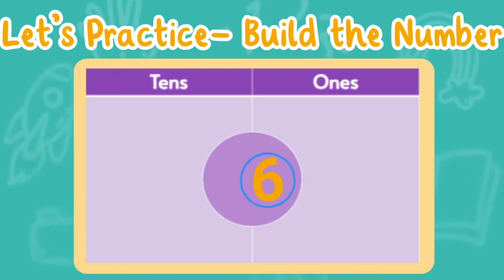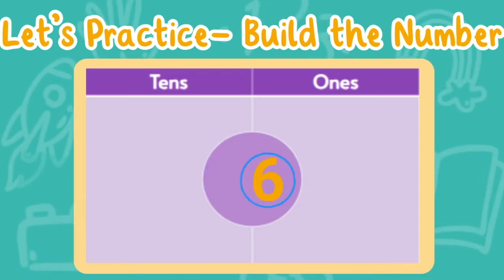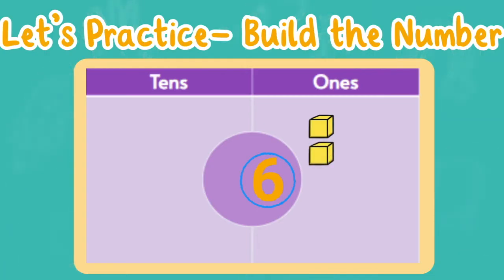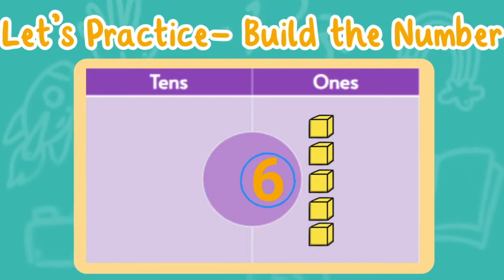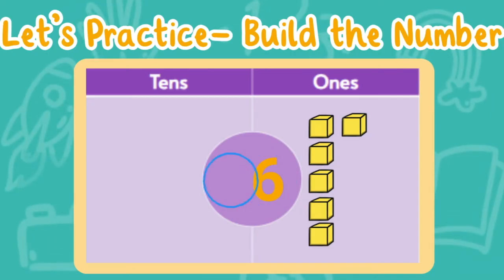Next up, let's look at the number 6. First, let's look at the ones place. I see the number six, which tells me I need six ones. Let's count them together: one, two, three, four, five, six. Now let's look at the tens place — I don't see a number in the tens place. That tells me there are no tens in the number 6. We do not need to use a ten stick. Six only has six ones.